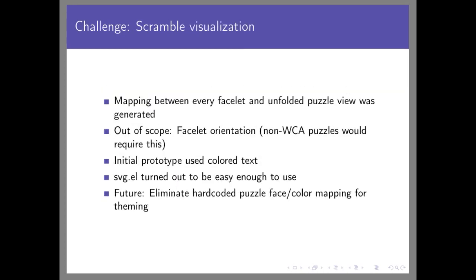For the visualization I had to figure out something not too complicated. I worked out where every facelet ends up in the unfolded puzzle view. I didn't consider facelet orientation, which may matter for other puzzles, but for simple cubes it's fine. My initial prototype used colored text but later I switched to the SVG library, which turned out to be easy enough to use. Currently I have hard-coded face color mappings, but I plan to make theming possible so that if your cube has different color mappings, you can fix that.